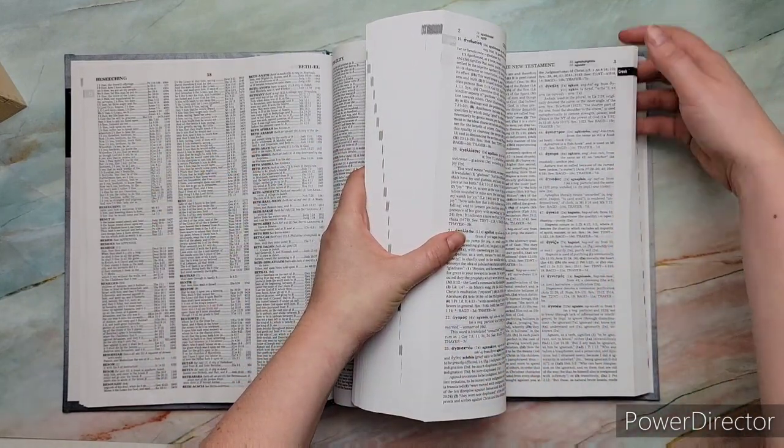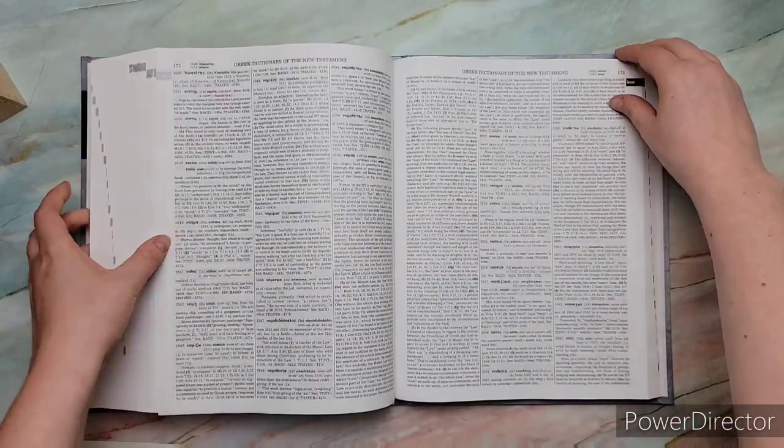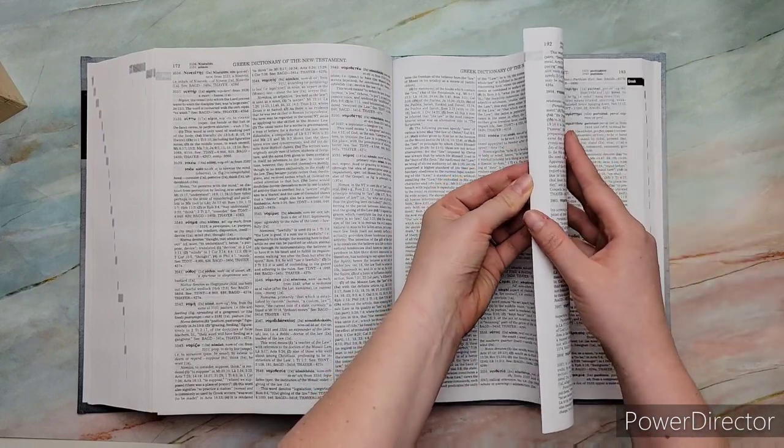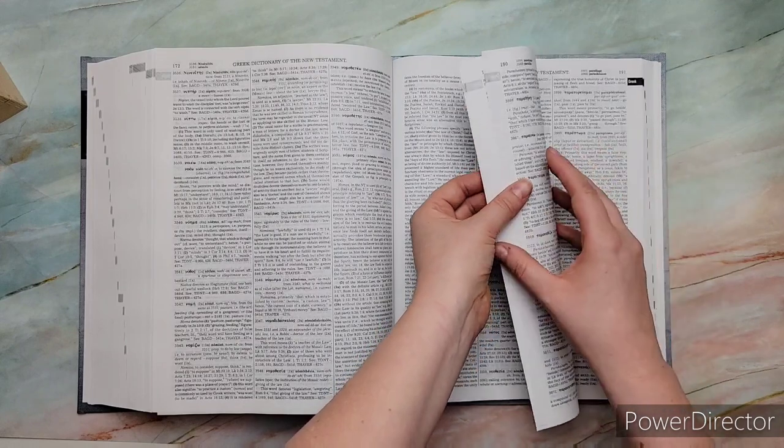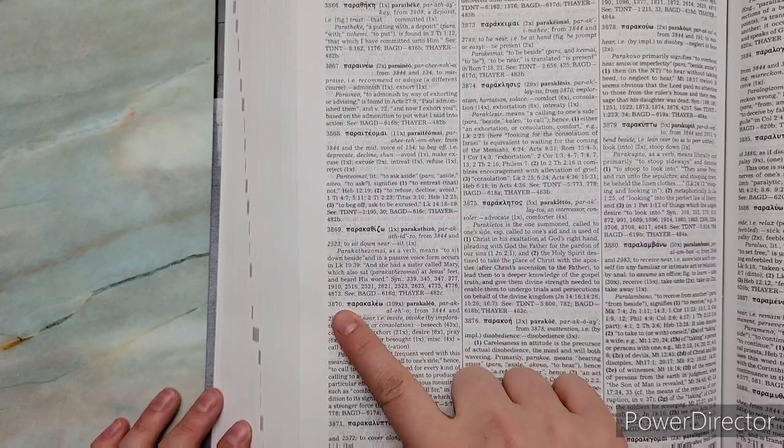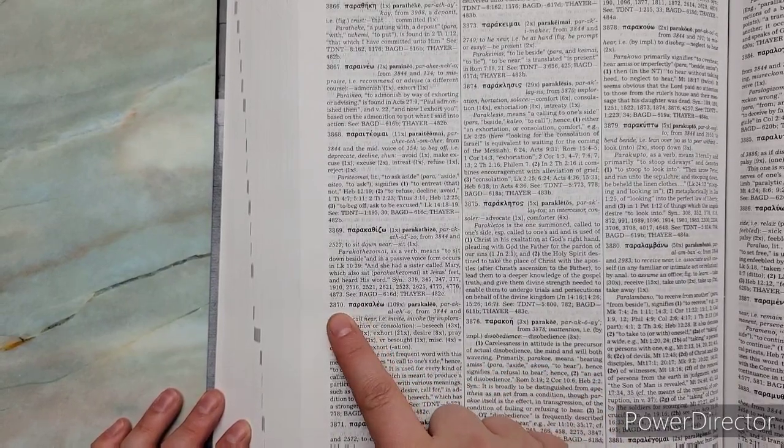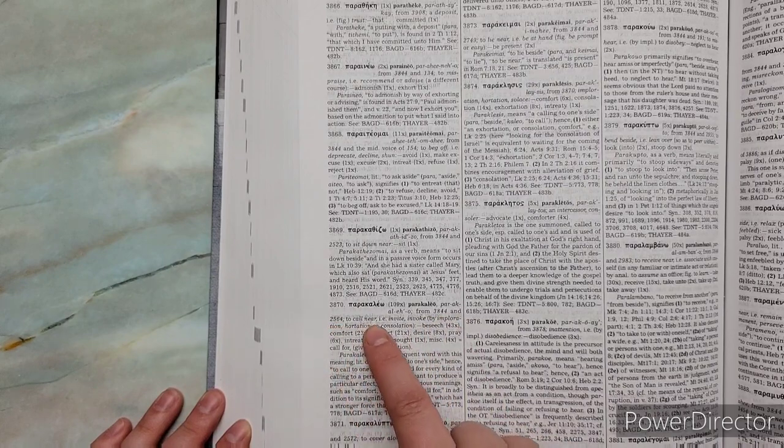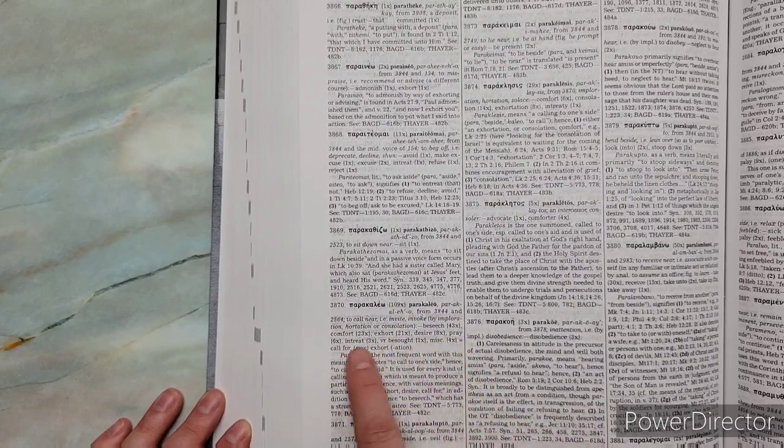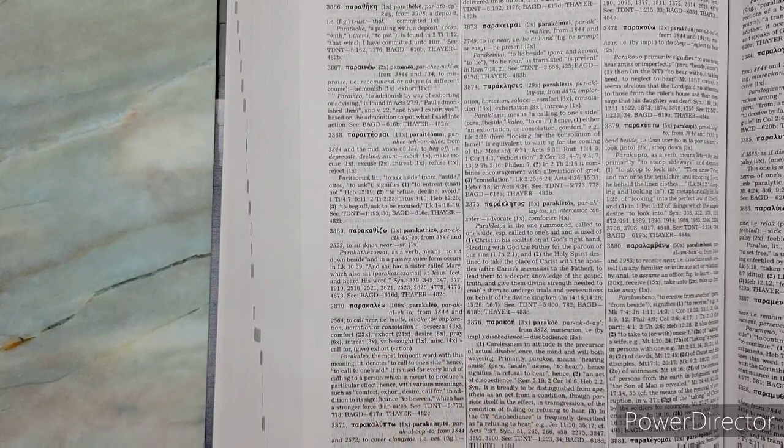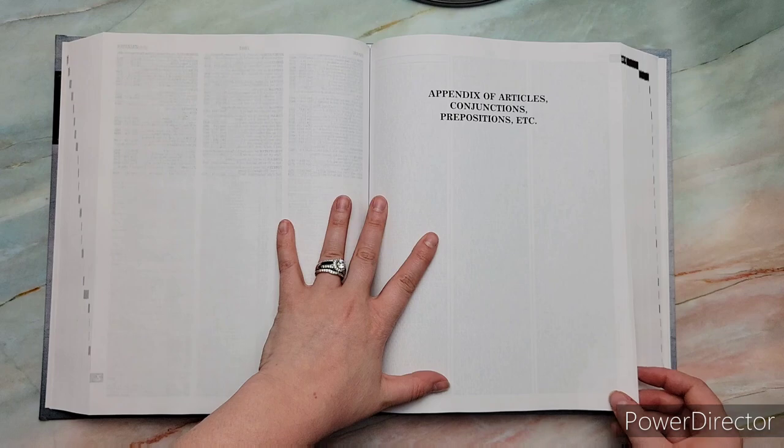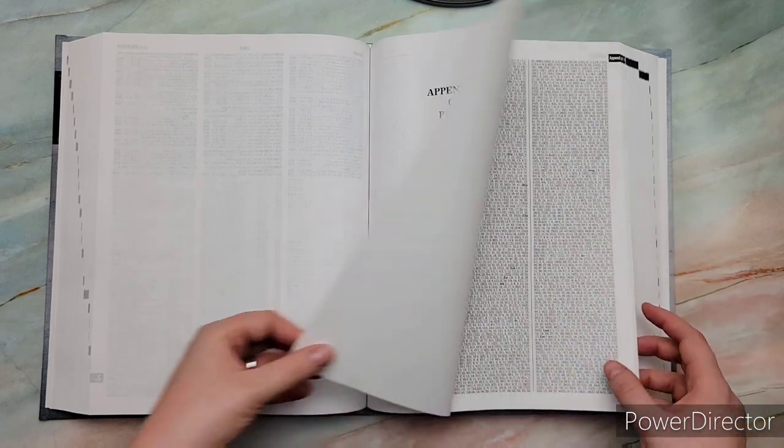And the number is 3870. So you look for that number, 3870. And then you're going to find it under the Greek 3870. So when I write it down, I put G for Greek, and then 3870. Then you have some of the Greek things right there. And then you have how many times it was translated in the King James, 109. You have two other Greek Strong's numbers, which is what this word is from, 3844 and 2564. And you can go look those up. And then it kind of gives you like a brief definition: to call near, invite, invoke.